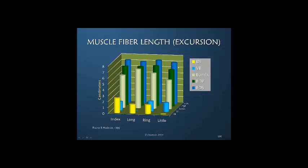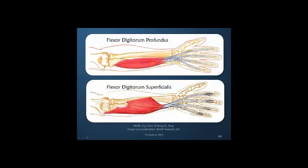This may seem confusing because the flexor digitorum profundus crosses one joint more than the superficialis, and yet this graph says that the superficialis has greater excursion. Well, it can be because of the anatomy — a portion of the flexor digitorum superficialis originates far more proximally than the profundus, making it actually a longer muscle-tendon unit than the profundus even though the profundus crosses one additional joint.